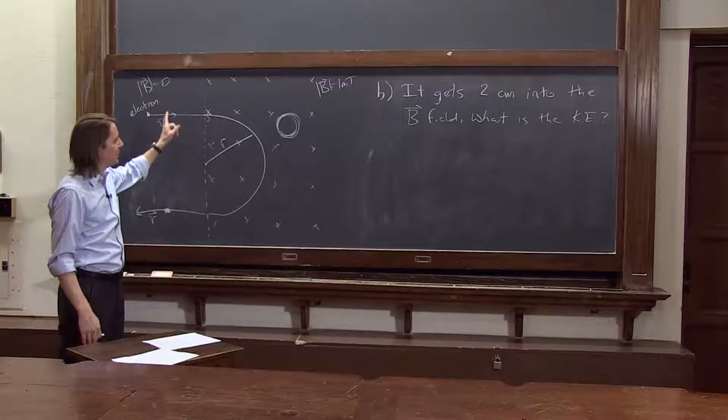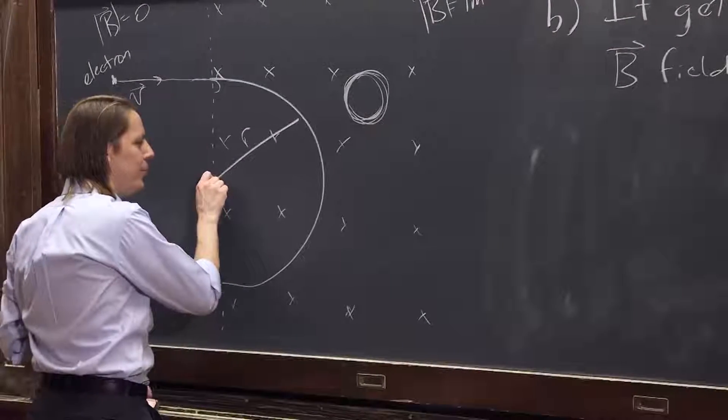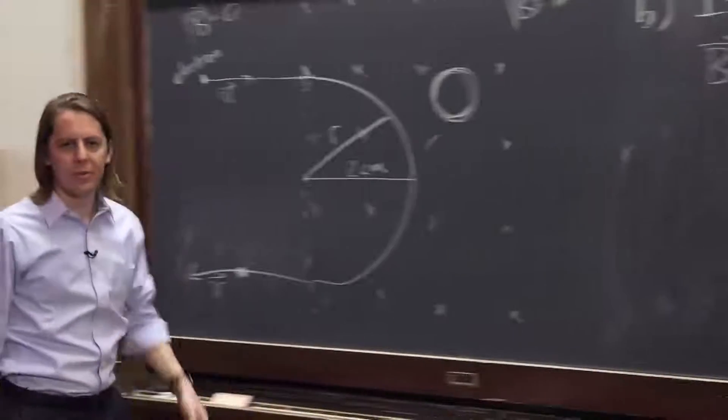But here they actually did tell us something useful, 2 centimeters. If it gets 2 centimeters into the field, that means they've told us the radius. If that's 2 centimeters, then the radius of the circle is 2 centimeters.